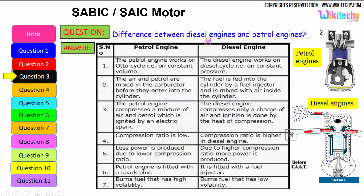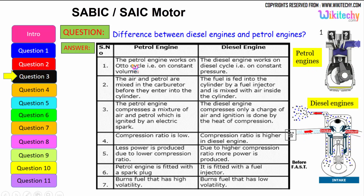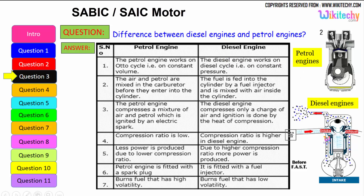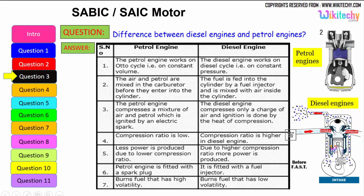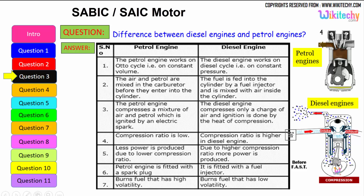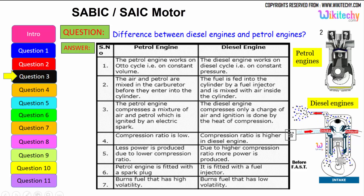Let us see the difference between the diesel engine and the petrol engine. The petrol engine works on the Otto cycle, therefore on constant volume. Whereas the diesel engine works on the diesel cycle, on constant pressure. The air and petrol are mixed in the carburetor before they enter the cylinder, whereas in a diesel engine the fuel is fed into the cylinder by a fuel injector and is mixed with the air inside the cylinder.